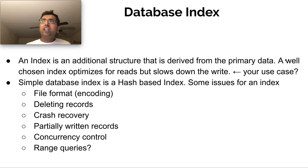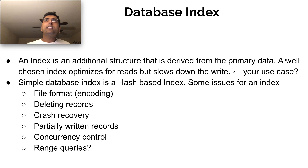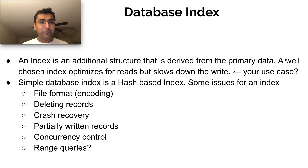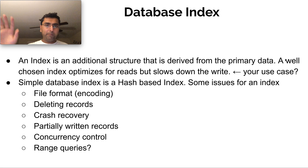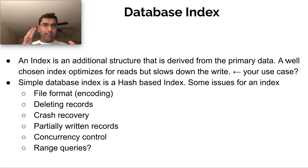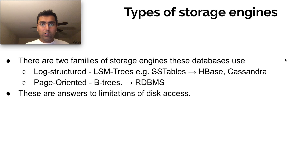There are also use cases indexes don't handle easily, like range queries — for example, give me all the cities that fall between this latitude and this longitude. Then you'd have to figure out what kind of index to form. R-trees are one way of solving that, but that's a separate topic. So, an index is basically a data structure derived from primary data that allows you to quickly seek the data you're looking for.